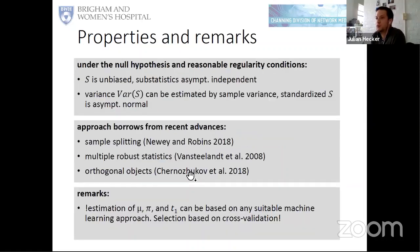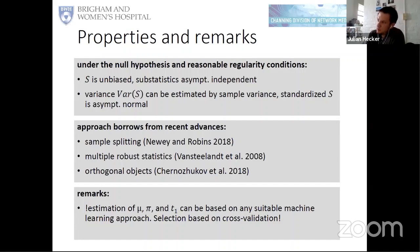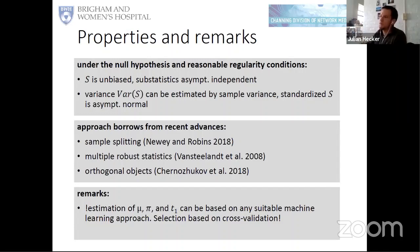From a theoretical point of view, under the null hypothesis and some reasonable assumptions, the test statistic is unbiased. The sub-statistics are asymptotically independent, and therefore the variance of the test statistic can be estimated by a very simple sample variance estimator. After standardizing the test statistic S, it is asymptotically normal — so we have a test statistic that uses the full data through the subsampling mechanism and can be evaluated against the asymptotic normal distribution to test for gene-environment interaction.